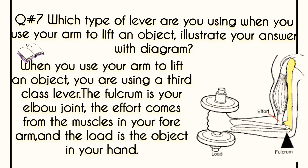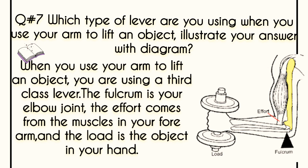Now question number seven: which type of lever are you using when you use your arm to lift an object? I've drawn diagrams for both questions — it will be easier for you. The answer is: when you use your arm to lift an object, you are using a third class lever. The fulcrum is your elbow joint, the effort comes from the muscles in your forearm, and the load is the object in your hand.